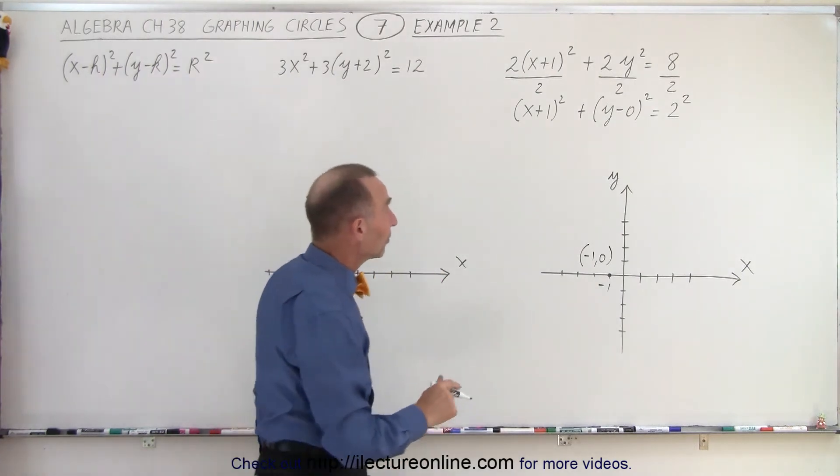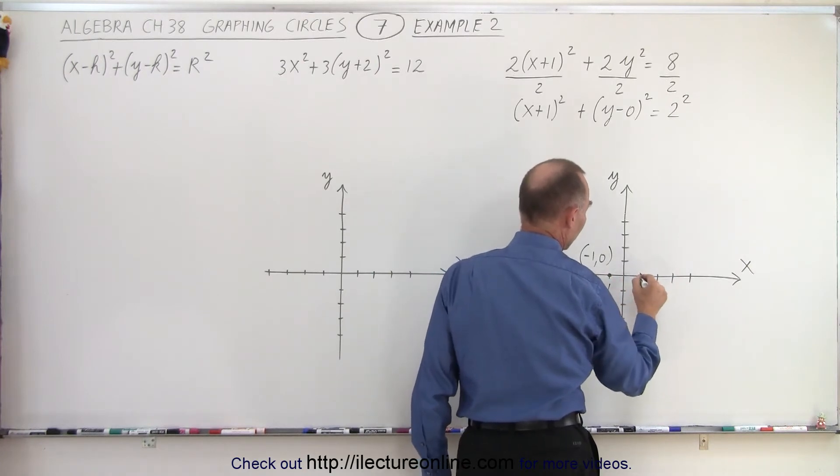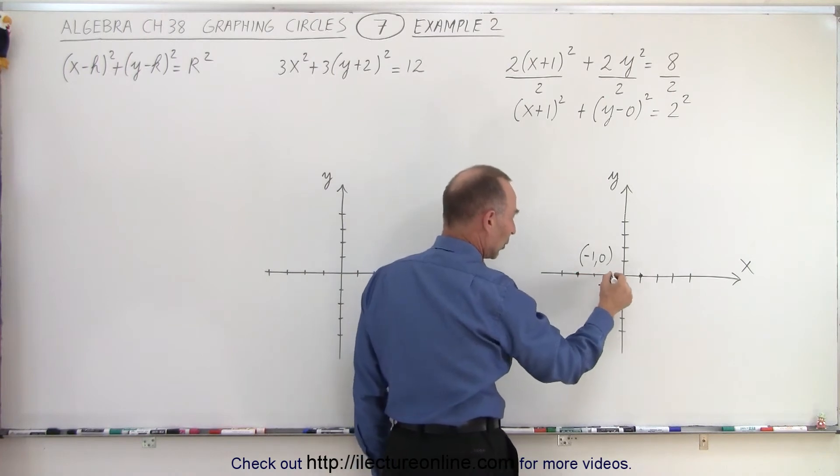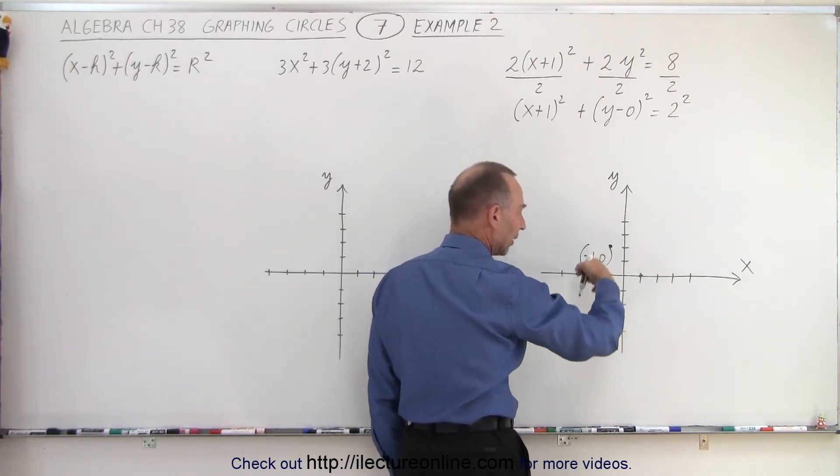Now we realize that the radius of the circle is 2. So from the center we go to the right 2 spots, we go down 2 spots, we go to the left 2 spots, and we go up 2 spots. And so we can see that those 4 points will lie on the circle.